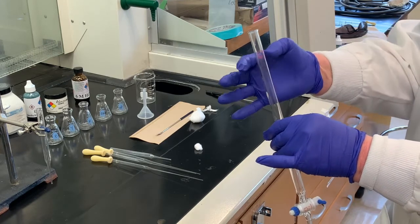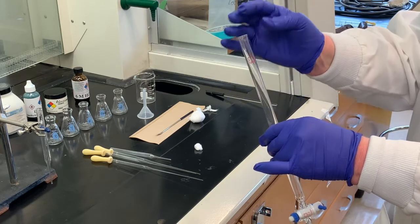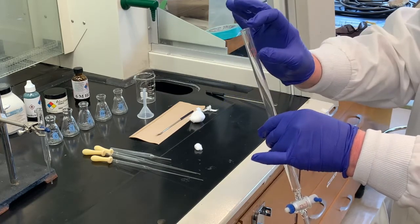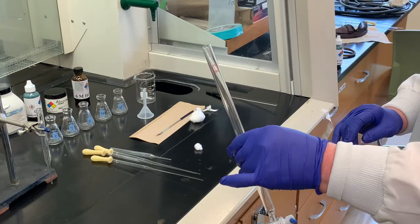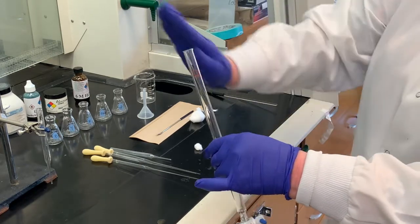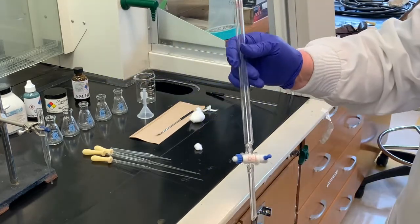And right at the top of the sand is where we'll add a drop or two of our sample to be separated. Let that drain a little bit, and then we'll fill the rest of it up with whatever solvent we're using for that separation. So we're going to do the same process here. This is just going to be a little bit smaller and quicker to get the experiment done.